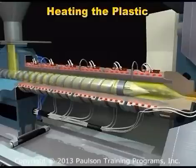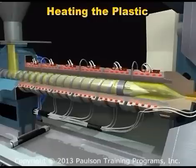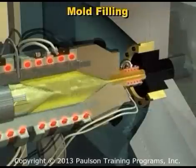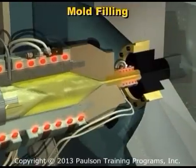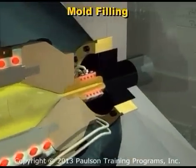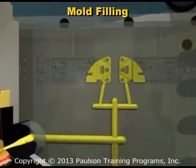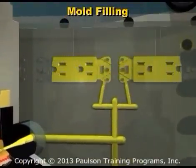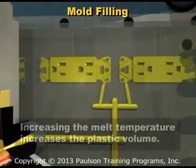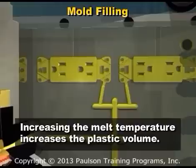Heat expands the plastic by moving the molecules further apart. The screw then moves forward to fill and pack the mold. There is a fixed volume of plastic transferred into the mold. If we increase the melt temperature, we increase the plastic volume, because there is more space between the molecules.